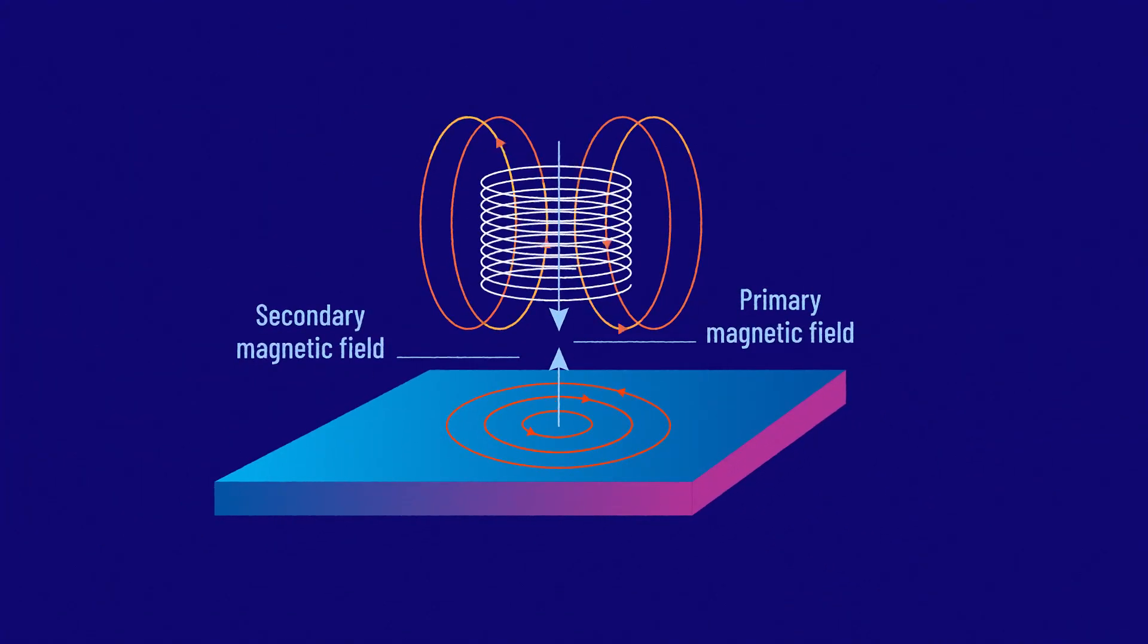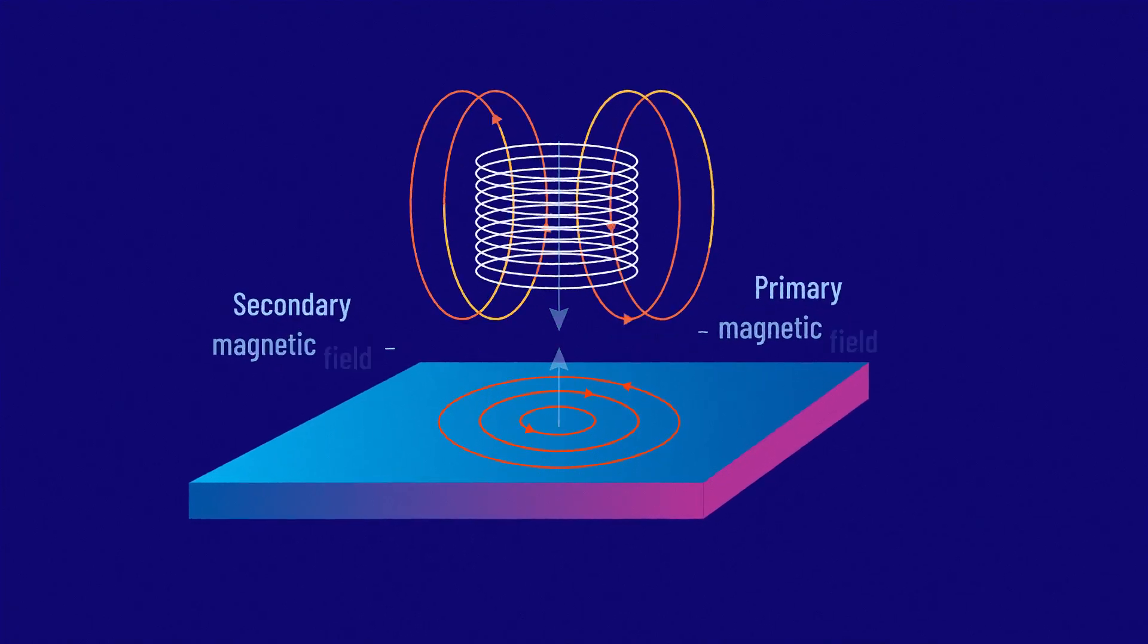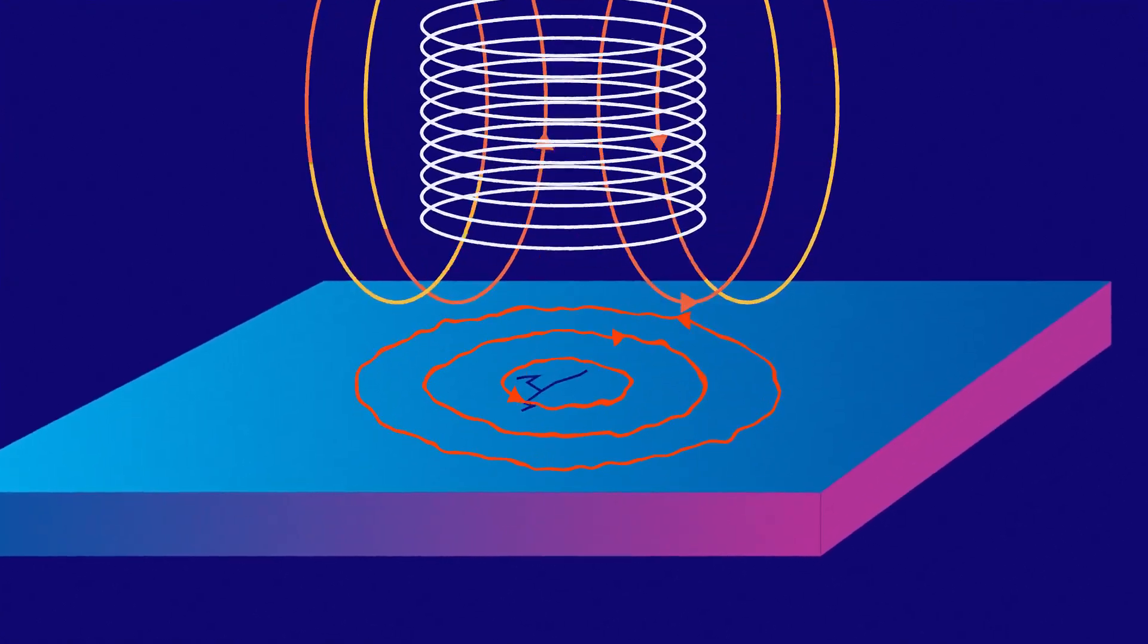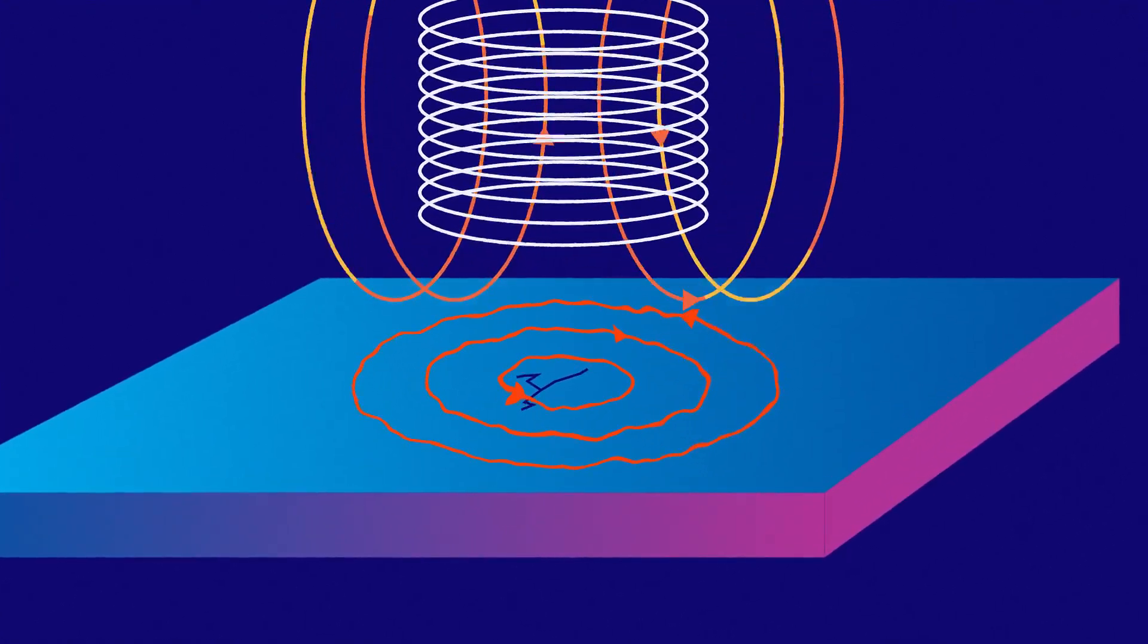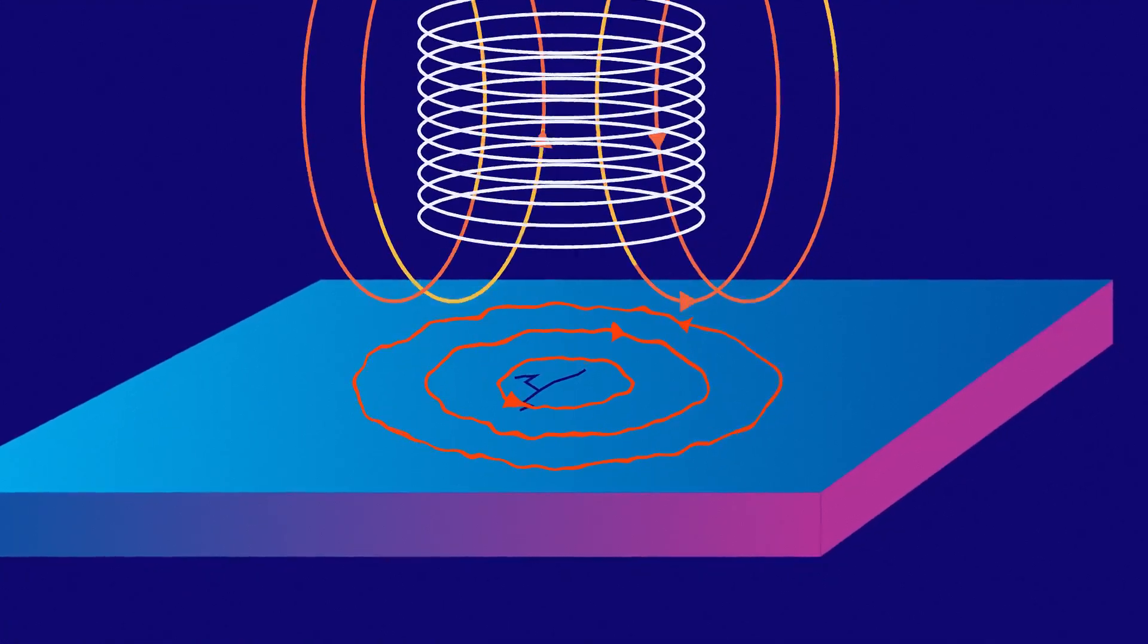By passing an electromagnetic field through a metal component, like a coil, when the field encounters a flaw, it causes a disturbance in the flow of eddy currents, tiny electrical currents generated in the material.